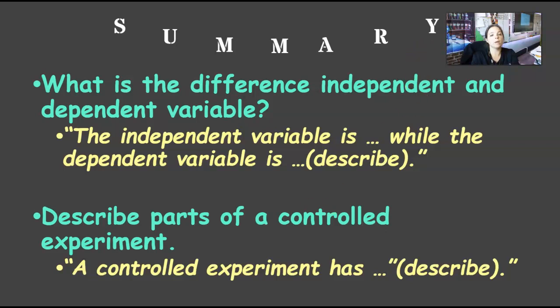In your summary at the bottom of your page eight, I would like you to write in, the independent variable is what? While the dependent variable is what? What do they do? What do you do during those parts? Describe the parts of a controlled experiment. It has what in it. There are three of them. Say the three and what they do. So that's it for the notes. If you have any questions, please don't hesitate to ask. I hope you have a nice day.